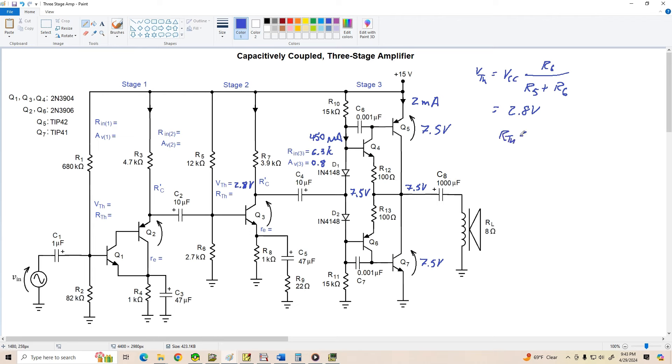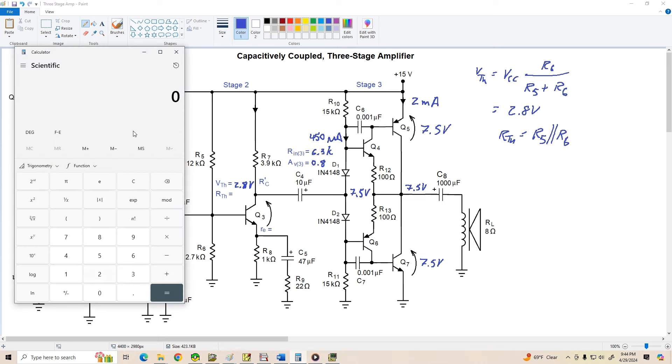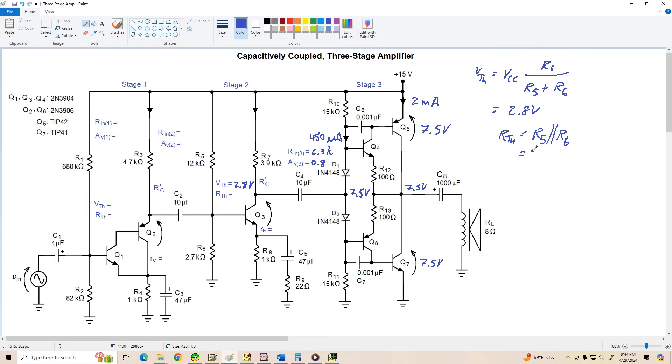And now let's find RTH. That's equal to R5 in parallel with R6. R5 is 12k plus 2.7k, and it's about 2.2k ohms.